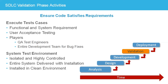When the number of open defects reaches a threshold indicating the software is ready for production, the QA team conducts user acceptance testing with the customer. If the customer agrees the software satisfies the requirements, they sign off on the project, and the software can move to deployment.